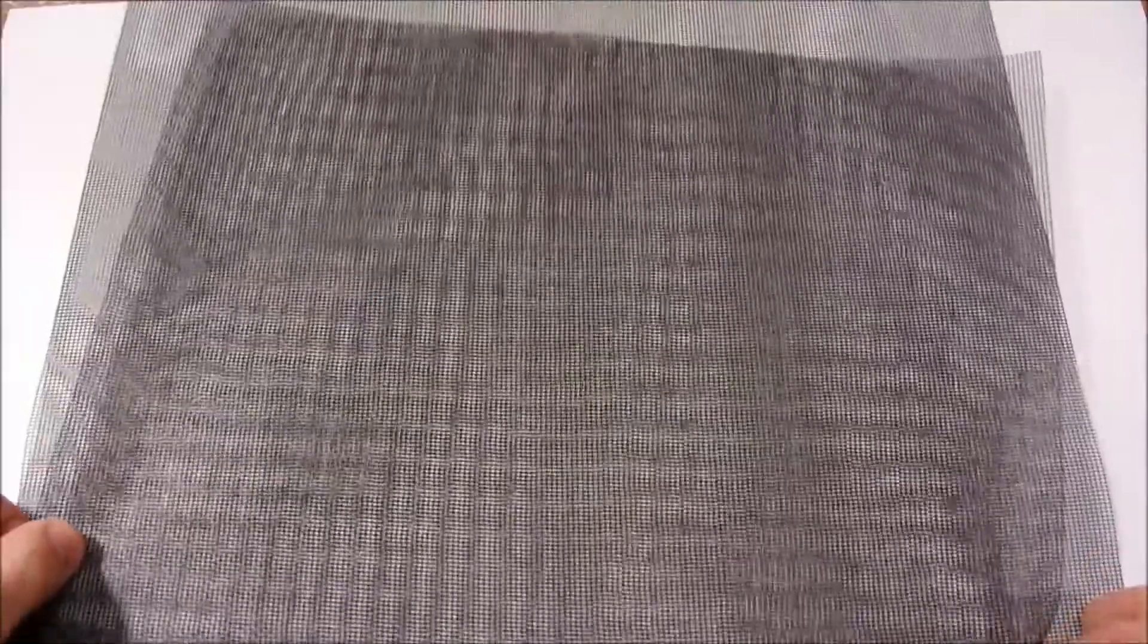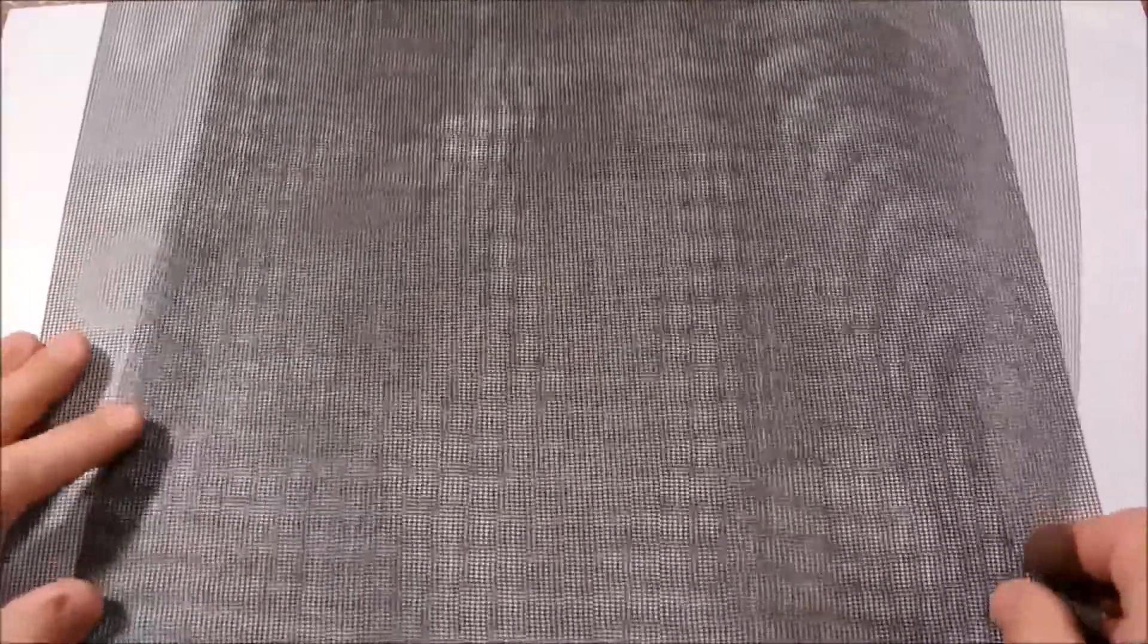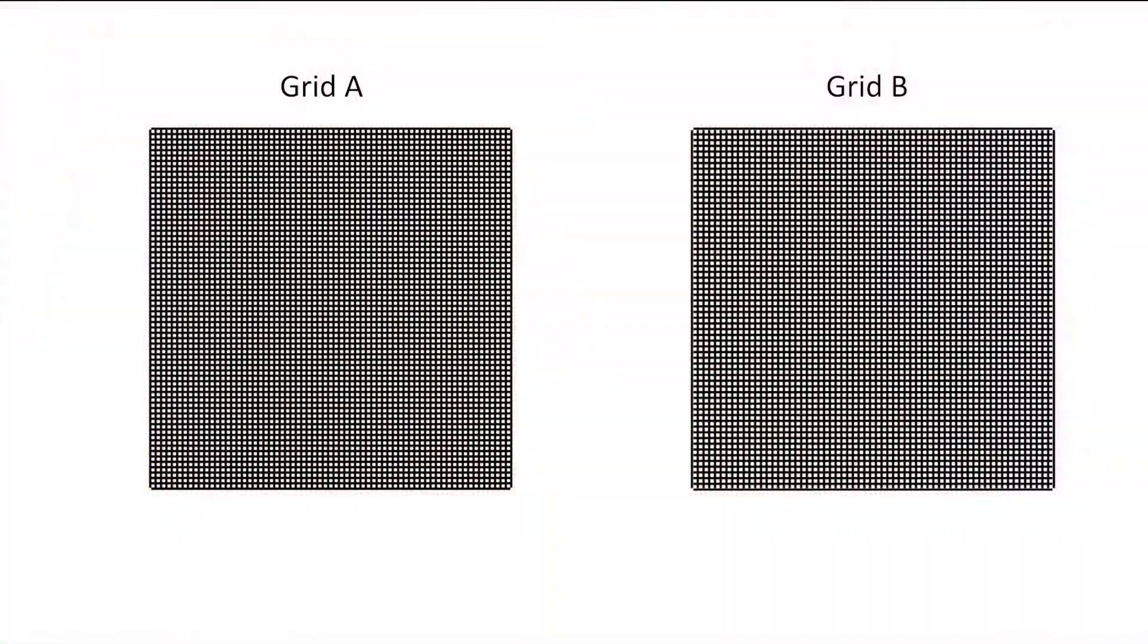When two repetitive patterns are placed together, an interesting new pattern appears, and this pattern changes based on the position of the two layers. Consider two grid patterns here. When they overlap together, a larger grid pattern appears.